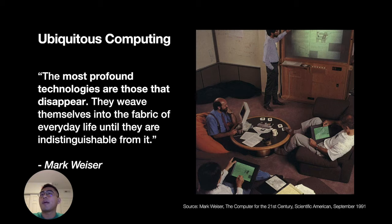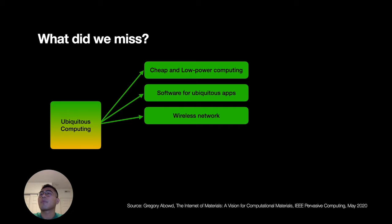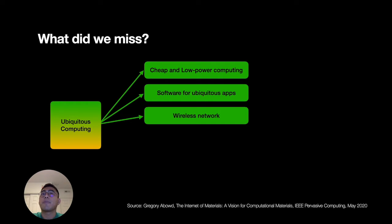In 1991, Mark Weiser envisioned the computer for the 21st century, called ubiquitous computing. He anticipated that in the world of ubiquitous computing, the most profound technologies are those that disappear and weave themselves into the fabric of everyday life until they are indistinguishable from it. Since then, many of his contemporaries have realized three core technologies that Weiser emphasized: chip and low-power computing, software for ubiquitous applications, and wireless networks that tie all the devices together.